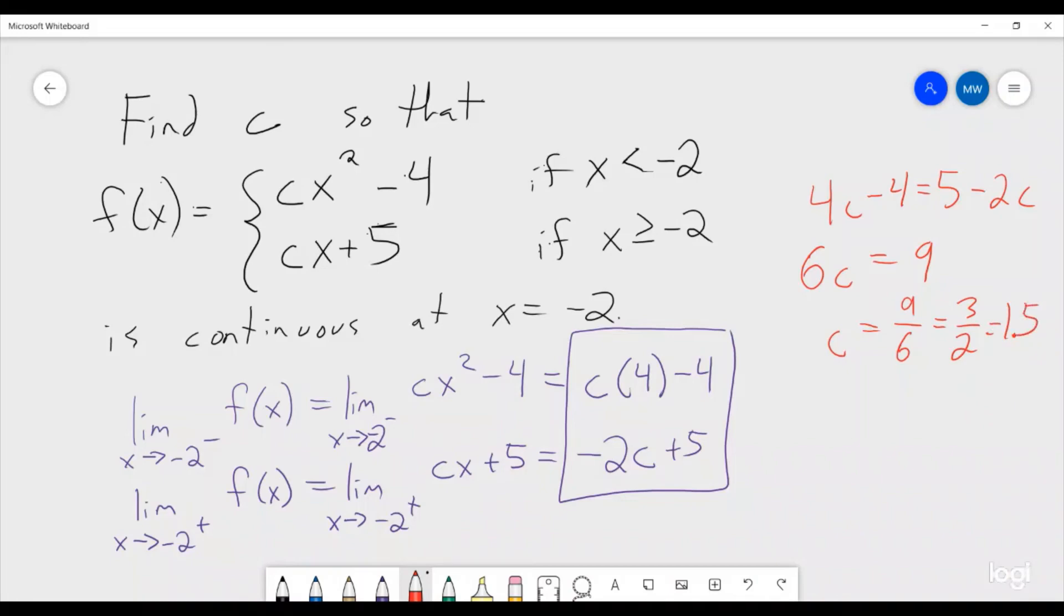And so that is our value of c. c is equal to 1.5 and if we go through and plug all of that in and we check that we can see that if we plug in x equals negative 2 into everything, the first one goes to 1.5 times 4 so that's 6 minus 2. 6 minus 2 is 2. And then 1.5 times negative 2 that's a negative 3 plus 5 also gives us 2. So this function is in fact continuous.